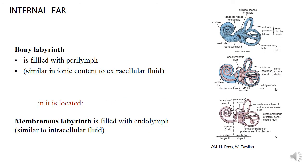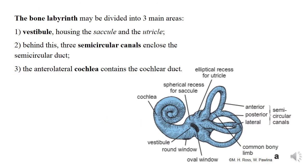Perilymph, located in the bony labyrinth, is similar in ionic content to extracellular fluid. Endolymph, located in the membranous labyrinth, is similar to intracellular fluid. The bony labyrinth consists of space in the temporal bone — there is an irregular central cavity, the vestibule, housing the saccule and utricle. Behind these, three semicircular channels enclose the semicircular ducts, and the anterolateral cochlea contains the cochlear duct.